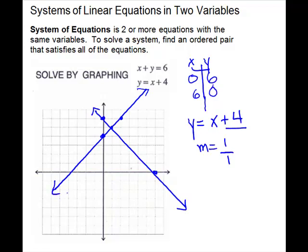This system does intersect in one point. It looks like the point is (1, 5). Sometimes it's hard to tell where they cross — that's what makes graphing not so efficient. It's okay if you're using a graphing calculator, but a little harder by hand. So let's double check and see if (1, 5) makes both equations true. If we plug 1 and 5 in: 1 plus 5 equals 6 — yes. And 1 plus 4 equals 5 — yes. So (1, 5) is the solution of this system.